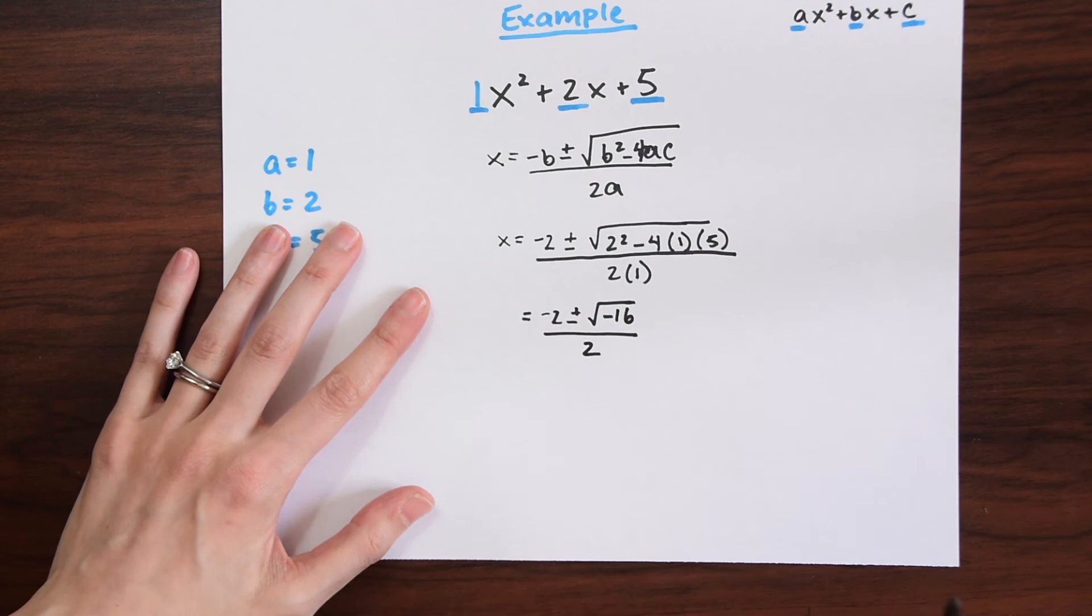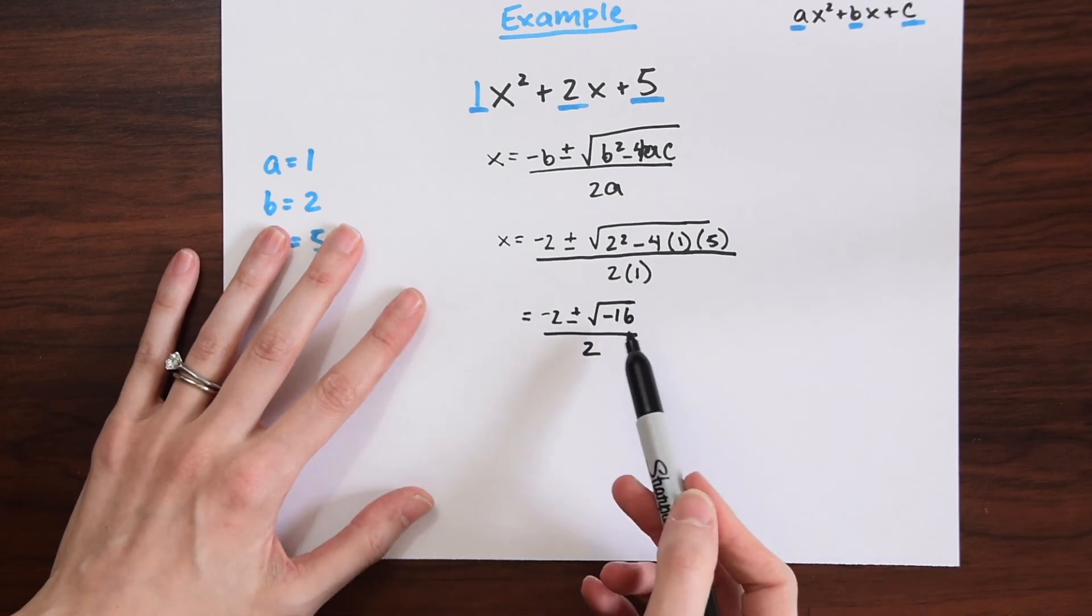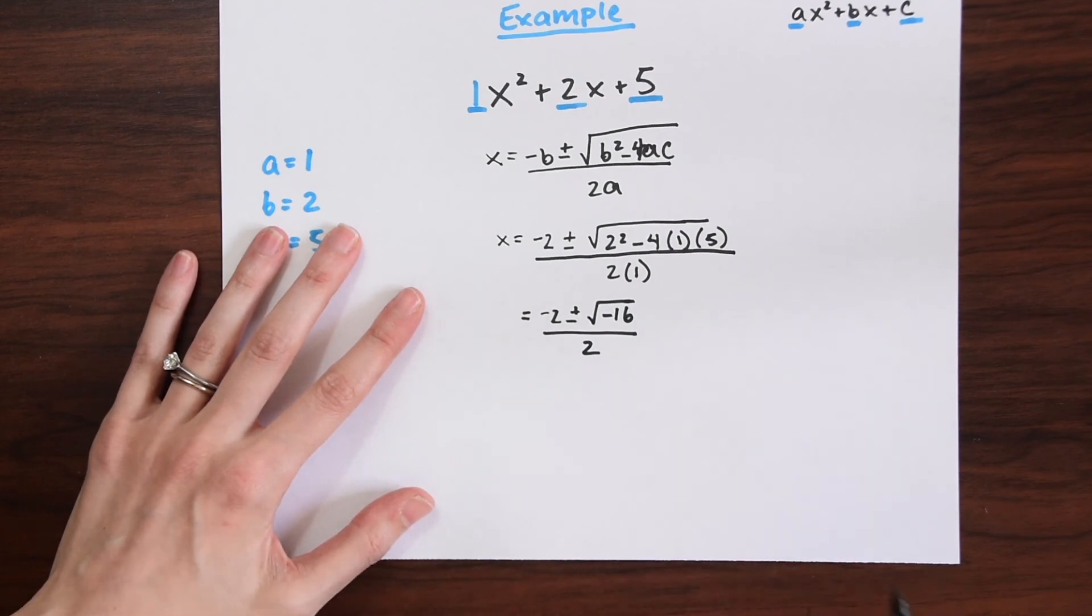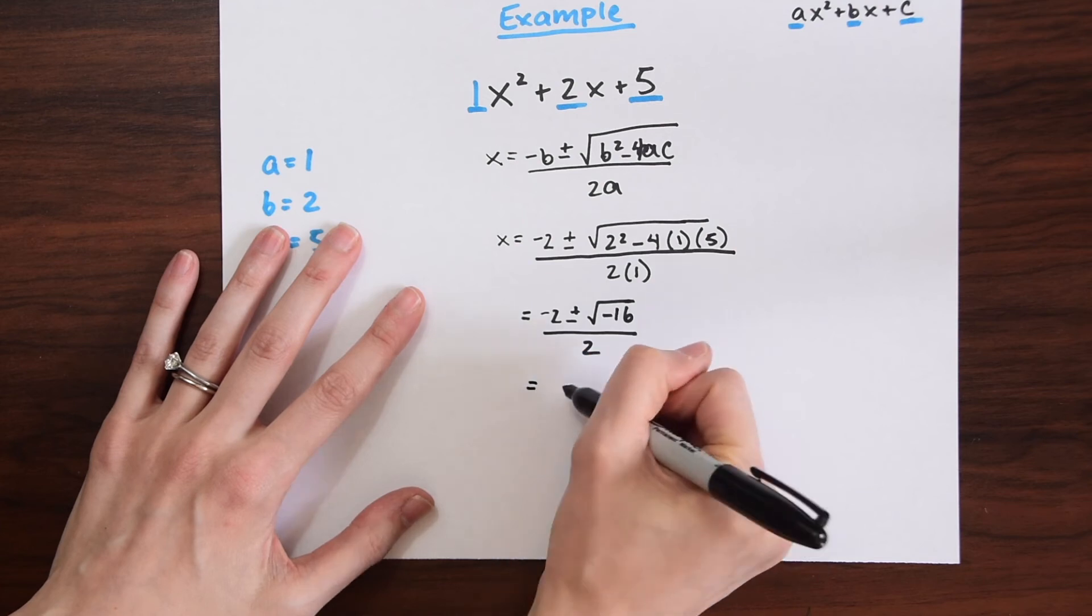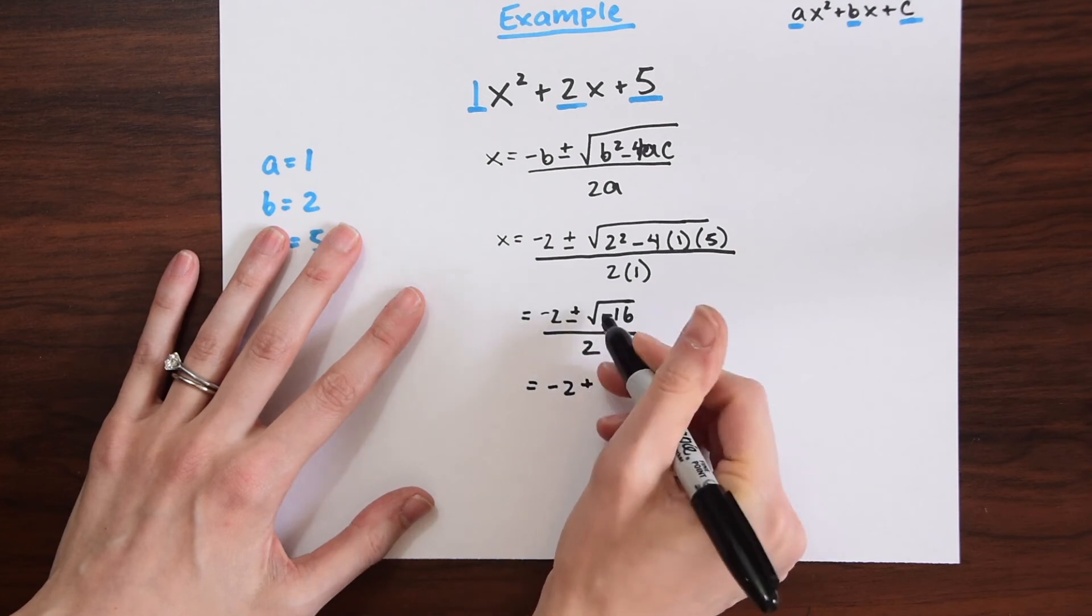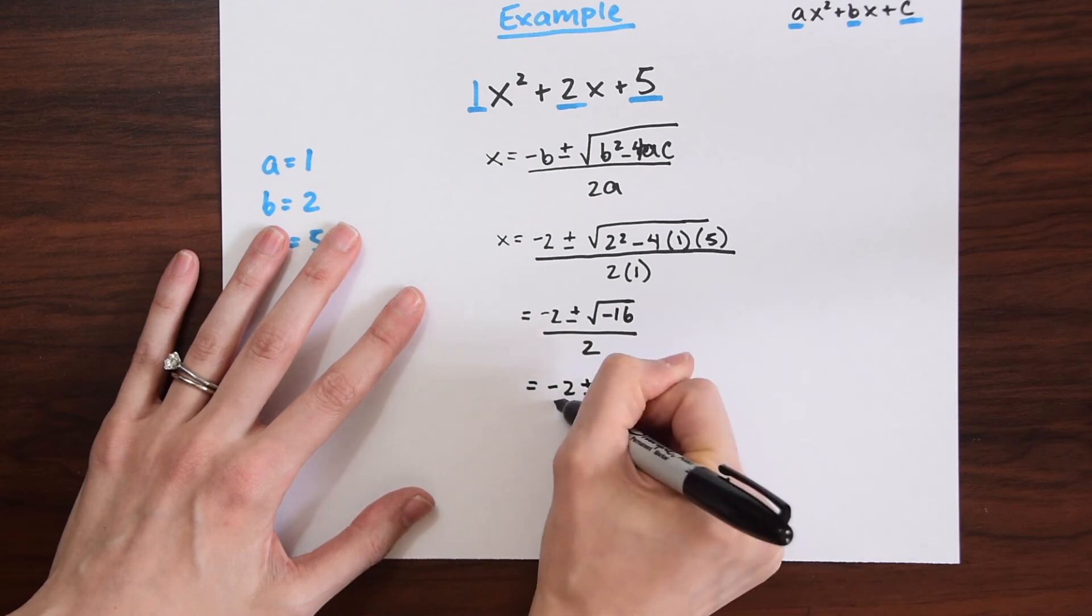That negative 16 stands out, right? Because we're never allowed to have a negative under a radical. That's where the imaginary roots and imaginary numbers come in. When we simplify radical negative 16, we get negative 2 plus or minus 4i all over 2.